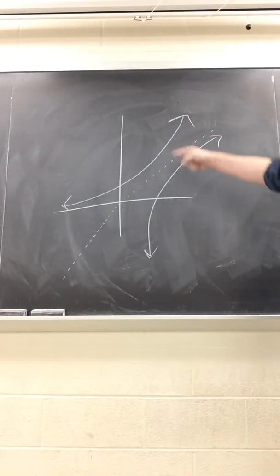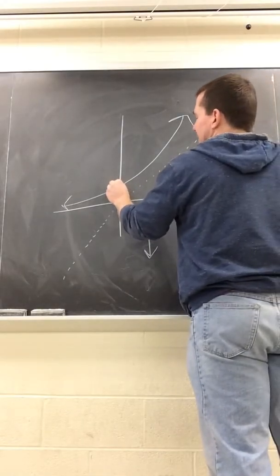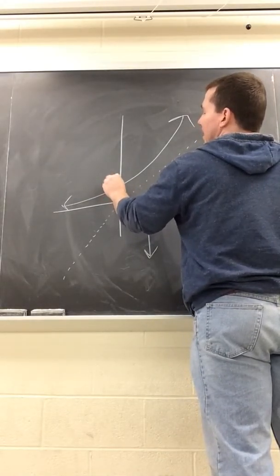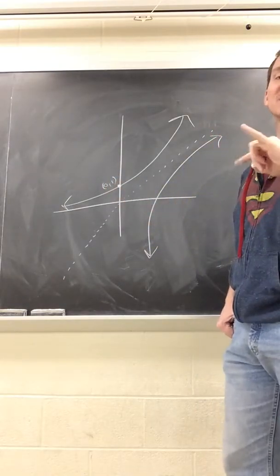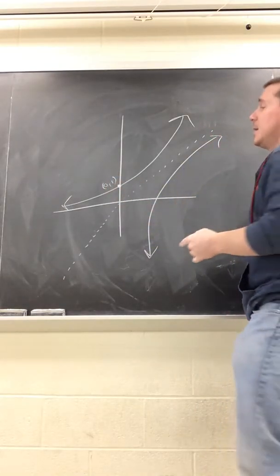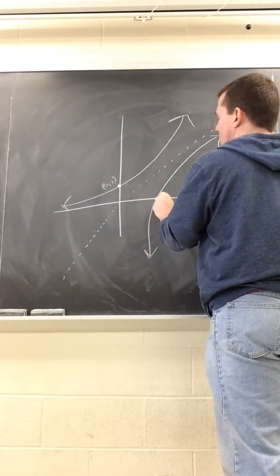The idea being if this is, say, the point zero one—that's x, that's y—algebraically we just flipped our x and our y. So graphically we could do the same thing. This would be the point one zero.